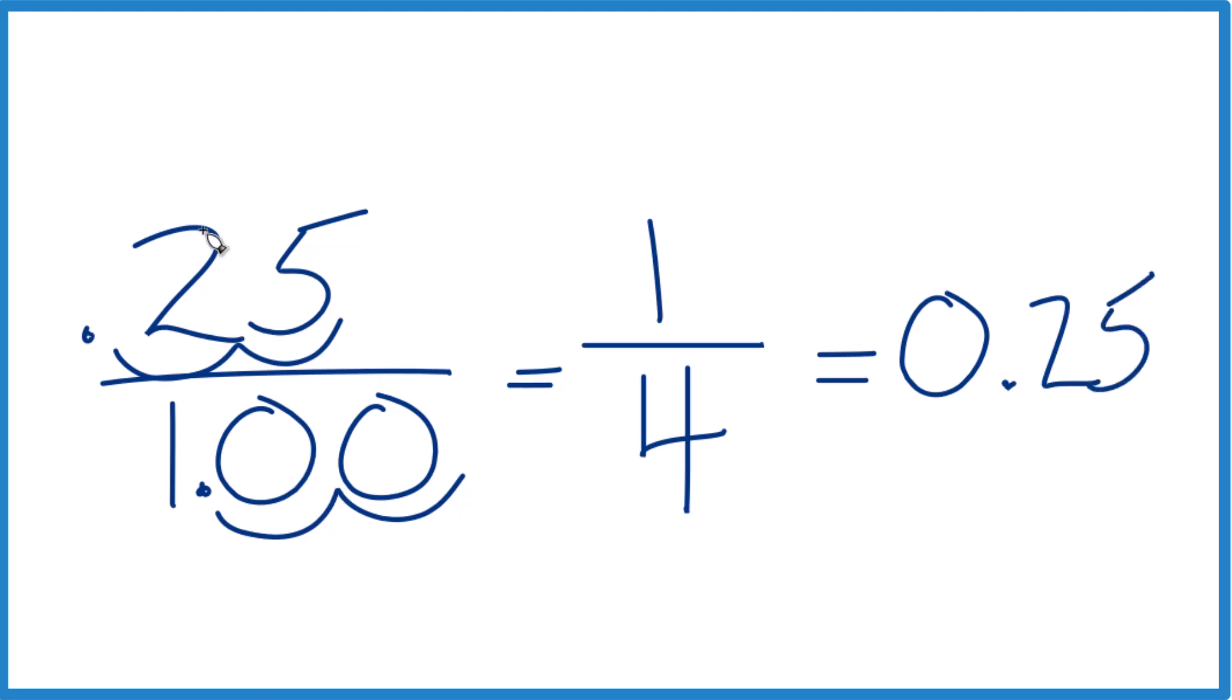So when we convert 25 over 100 or one fourth to a decimal, we get 0.25, and all of these are equivalent. They have the same value, just written a little differently.